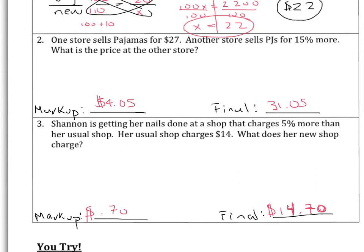For number two, you should have had a markup of $4.05 and a final price of $31.05. For number three, you should have had a markup of $0.70 and a final price of $14.70. When you divided and got your final price, you probably got 14.7 — but that is not a dollar amount. We need two places after the decimal, so you must add a zero to make it $14.70. If you don't add that zero, it will be counted as wrong.